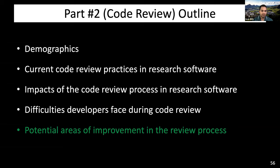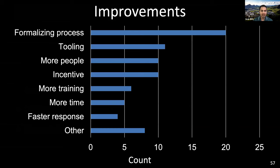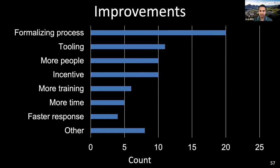Potential areas of improvement in the code review process: our analysis found seven high-level ways to improve. The most common answer is formalizing the process, likely due to the informal process followed by most research software developers. Automatic tooling could relieve some burden from reviewers. Even though commercial and open-source projects frequently use tools to support code review, many participants indicated a lack of tool support for code review in research software. Finally, there is a need for more people, incentives, and more training to improve the code review process. Besides payments, some other kind of reward might help with that.